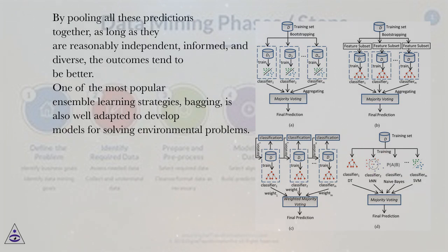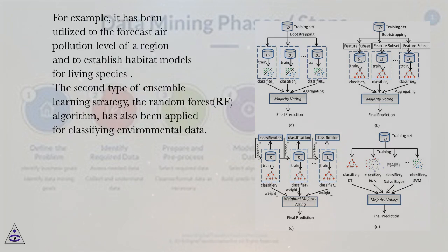One of the most popular ensemble learning strategies, bagging, is also well adapted to develop models for solving environmental problems. For example, it has been utilized to forecast the air pollution level of a region and to establish habitat models for living species.